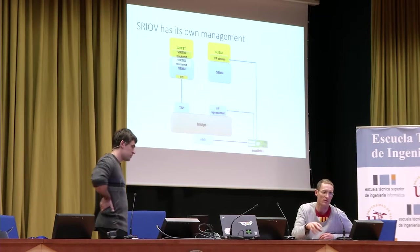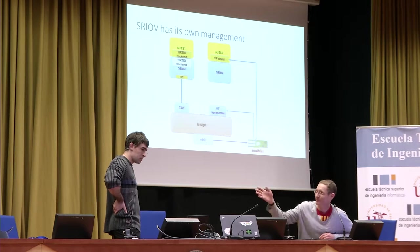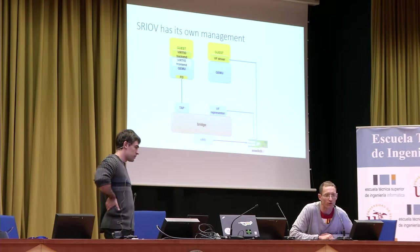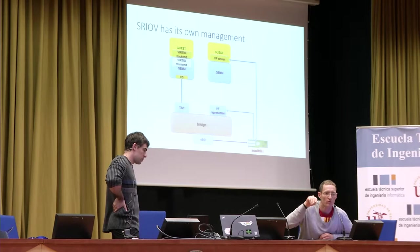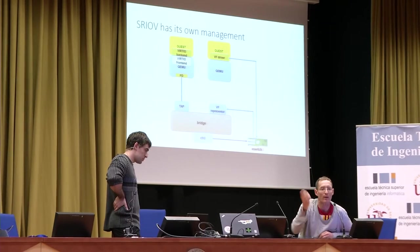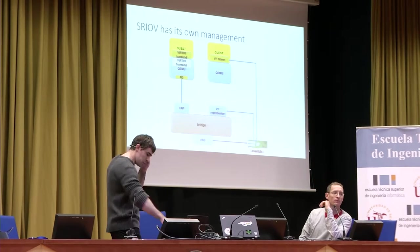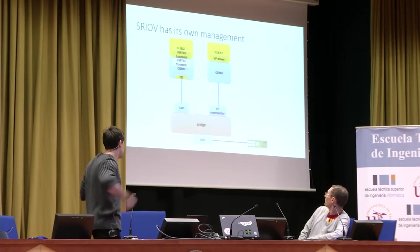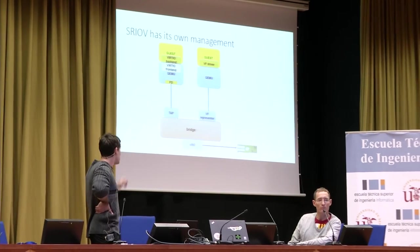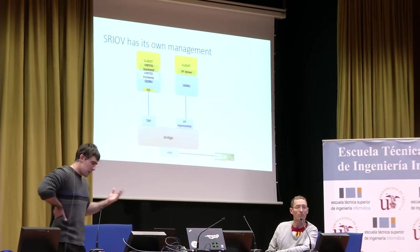We have a representer — something that represents a virtual function — that can be embedded in the regular virtual switch. It's a native device that represents the virtual function, and it's a sort of slow path. If you transmit a packet to it, it arrives to the VM. If the VM sends a packet and no policy is configured on the embedded switch, it's trapped by the virtual function and appears on the hypervisor. While physically it looks one way, we can conceptually think about it differently. The VF representer plays exactly the same role as the TAP in the para-virtual case, giving us all the flexibility of a para-virtual machine with SR-IOV.